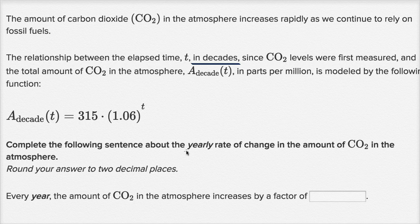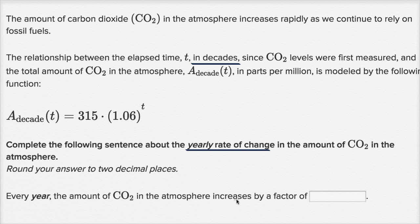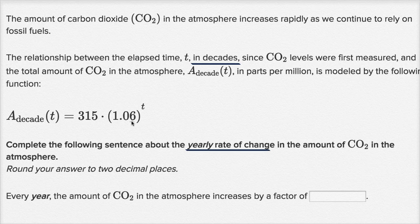Complete the following sentence about the yearly rate of change in the amount of CO2 in the atmosphere. Round your answer to two decimal places. Every year, the amount of CO2 in the atmosphere increases by a factor of... If they said every decade, this would be pretty straightforward — every decade you increase T by one, so you multiply by 1.06 again. So every decade, you increase by a factor of 1.06. But what about every year?